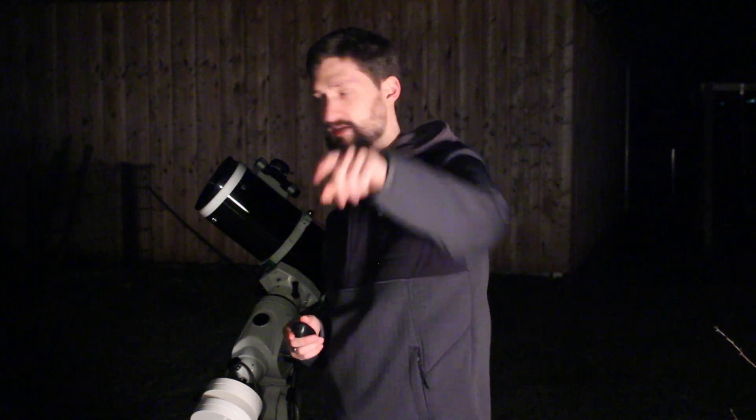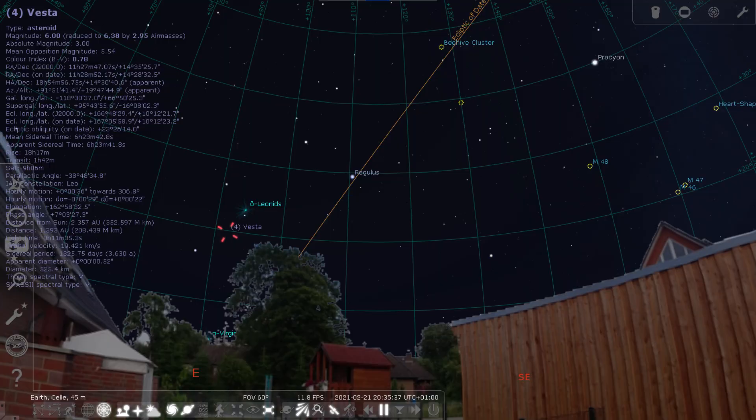Okay, enough of that. This is my Skywatcher Newtonian telescope with the focal length of 750 millimeter. And I just plugged this DSLR right onto the scope. I used nothing else, no Barlow lens, nothing and just pointed the telescope right onto Vesta.